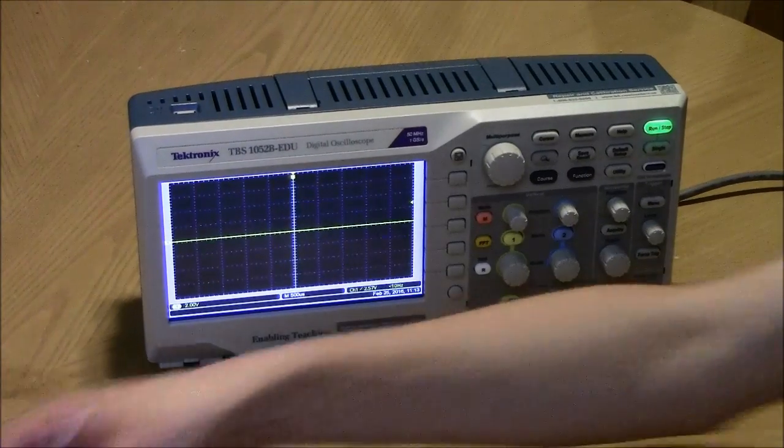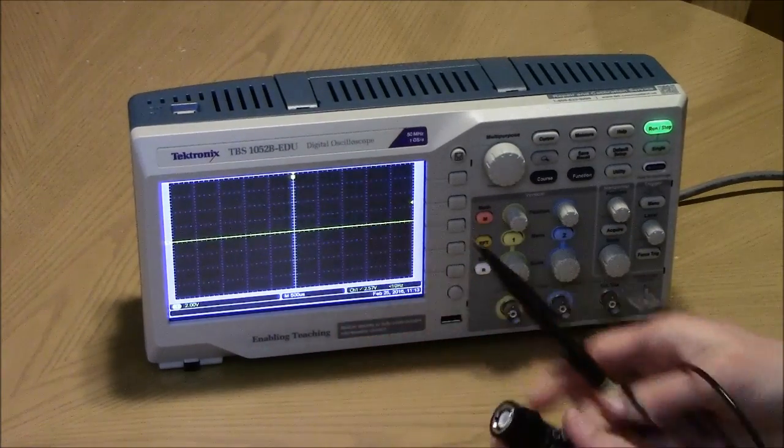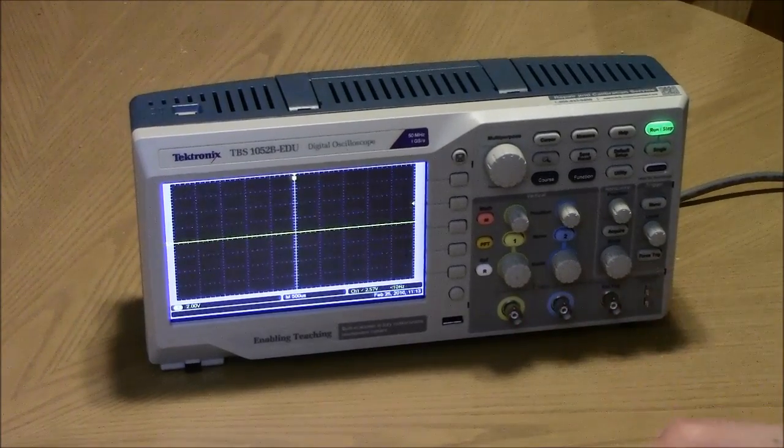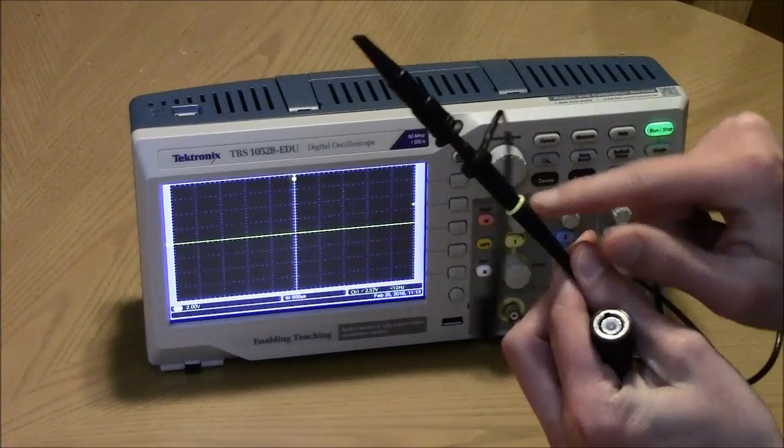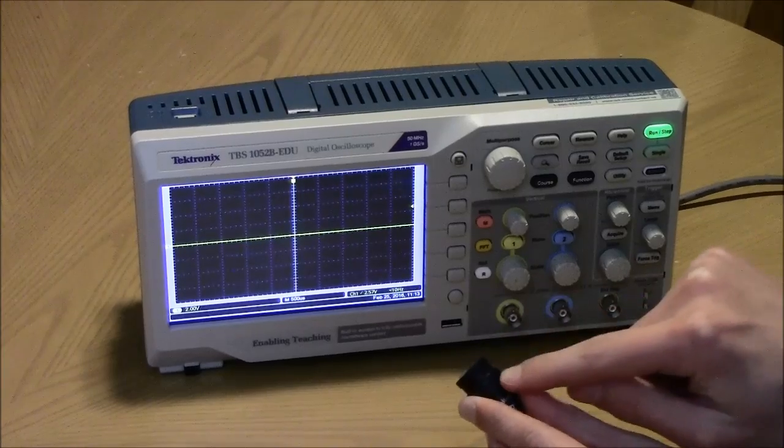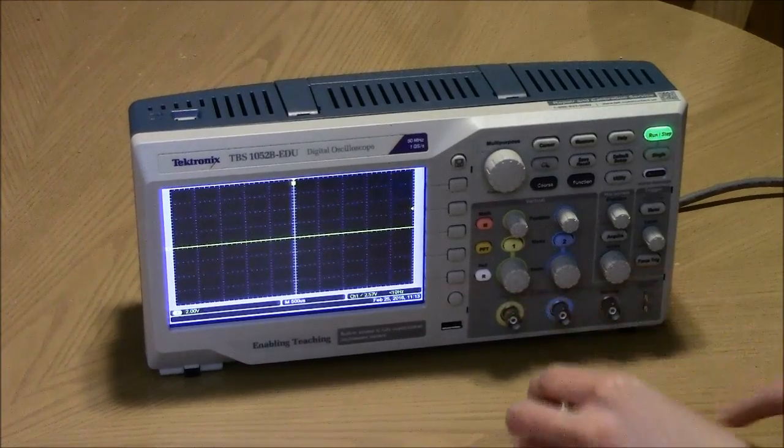The first thing you want to do is connect a probe. They go in these two ports here, this yellow one and blue port here. We've got the yellow ring flag on this one so we'll put it in the yellow port. To put it in you'll line up these little ridges with the ridges on the port.